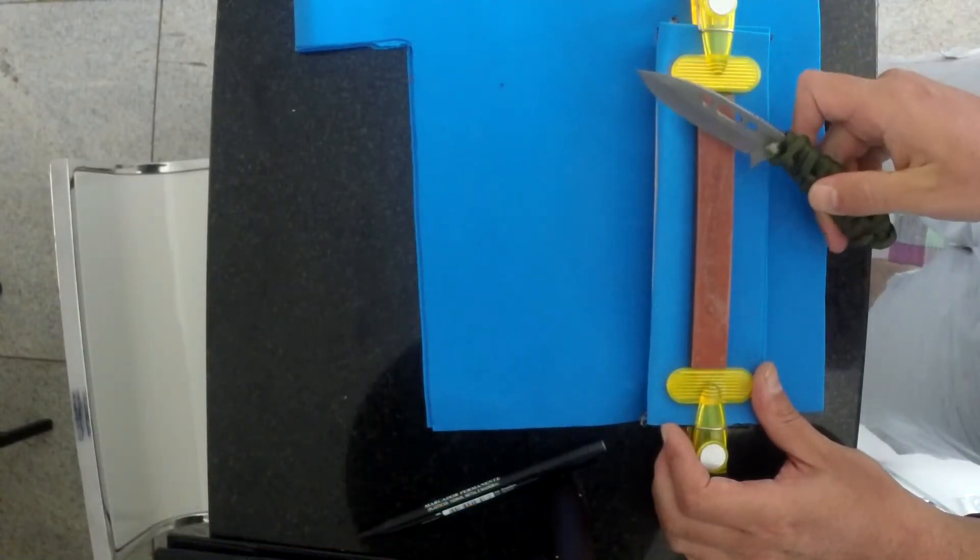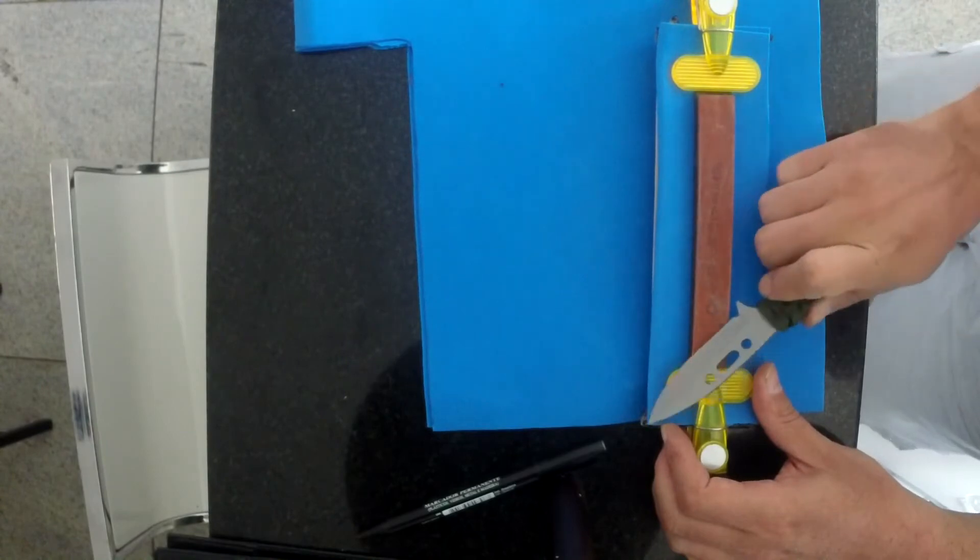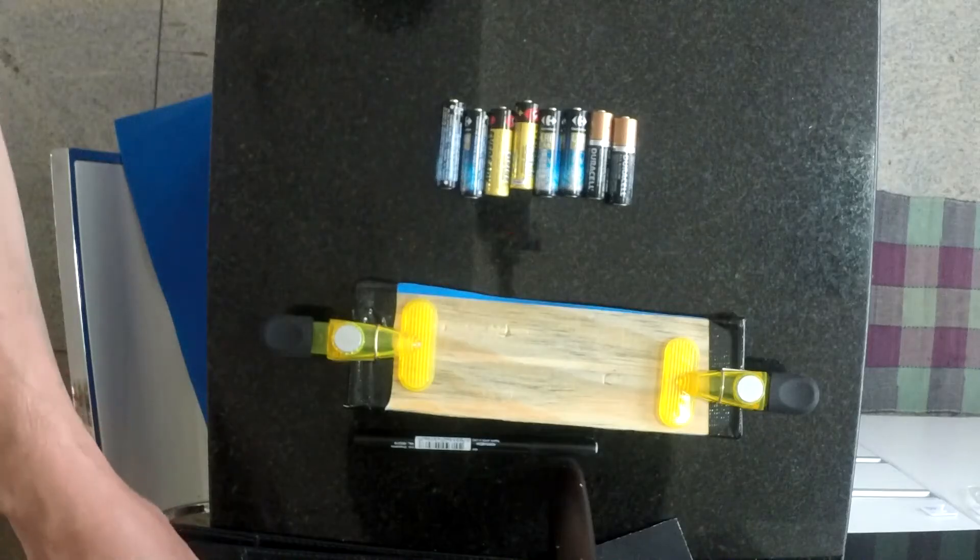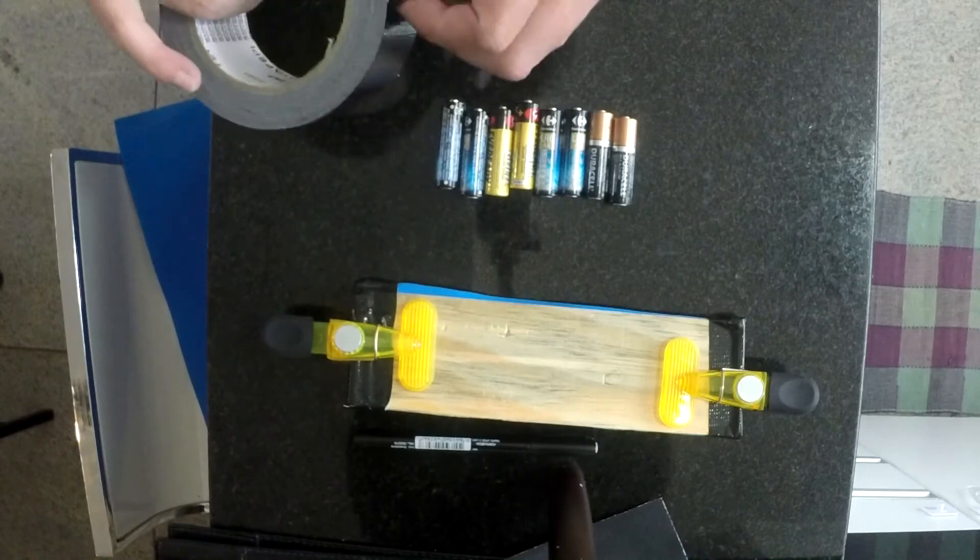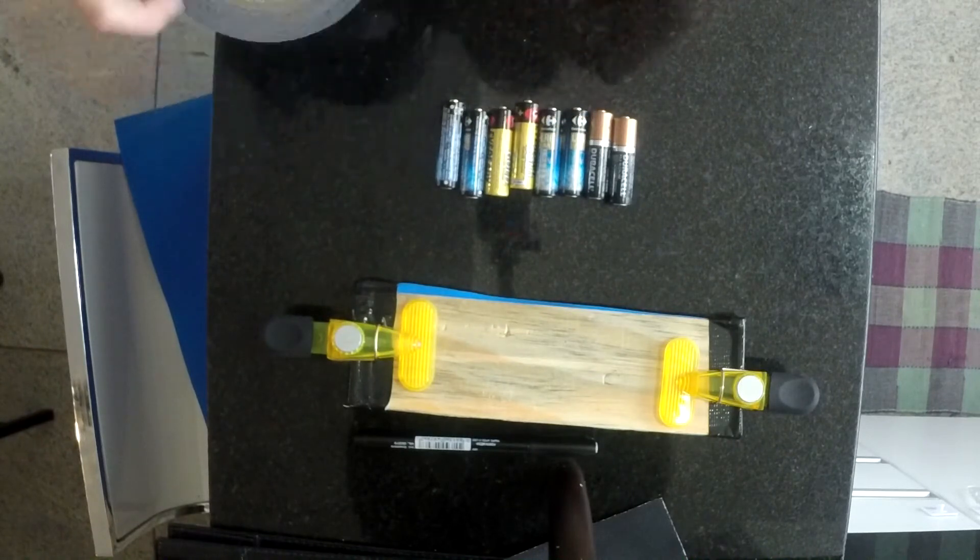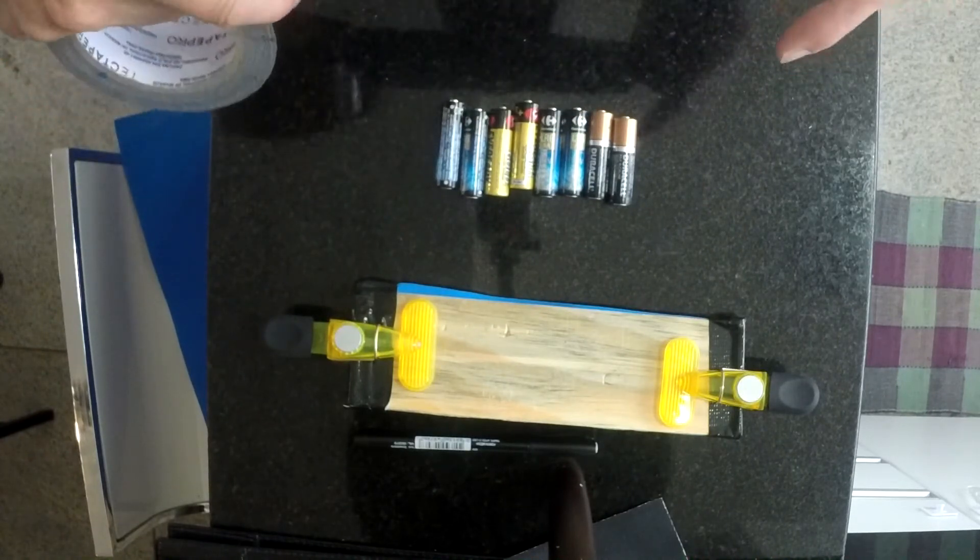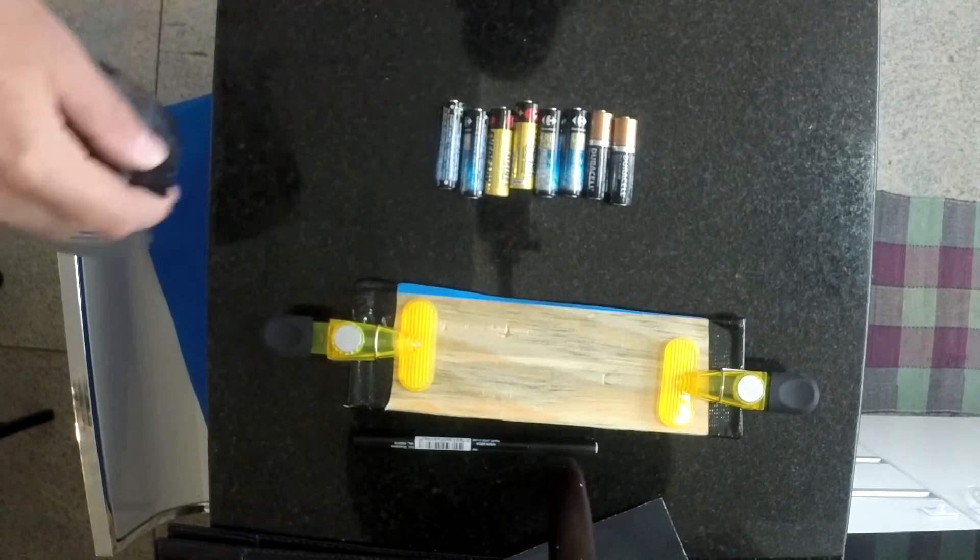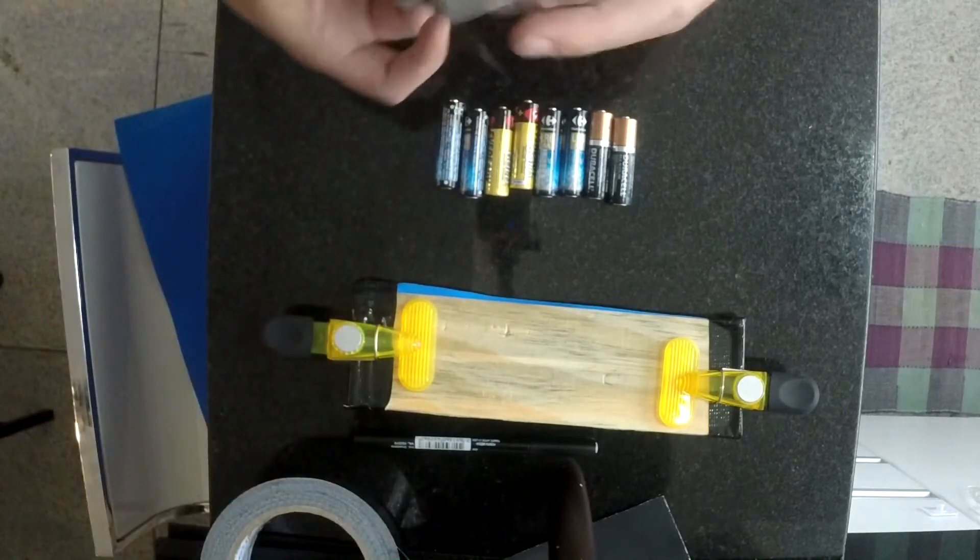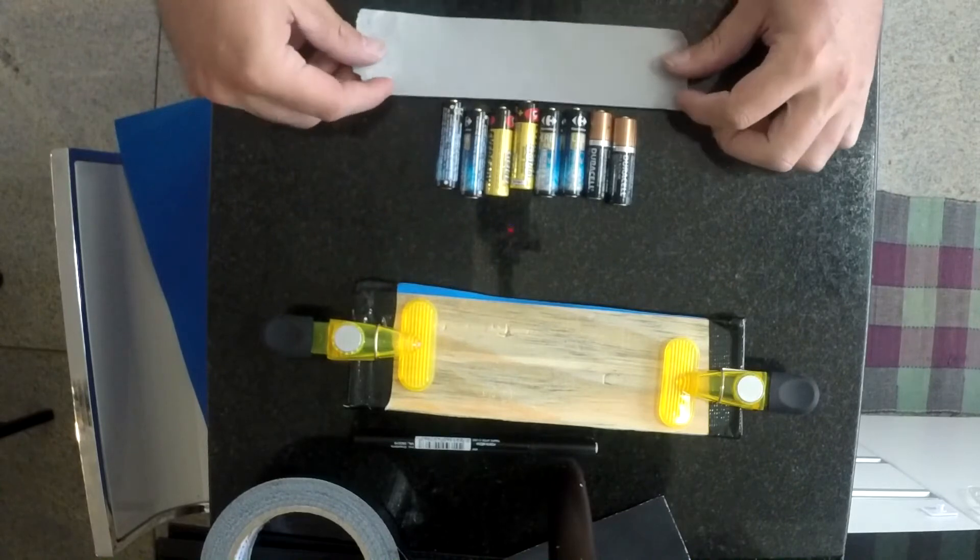Uma forma de colocar um bom suporte para que a sua prancha não fique dançando é utilizar algumas coisas. Por exemplo, eu vou usar pilhas velhas, que seriam descartadas, então é uma forma de eu reciclar. Se eu for jogar no lixo especial, ela vai acabar sendo depositada em algum lugar. Então, aqui,